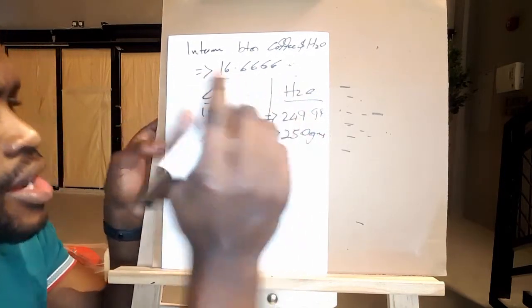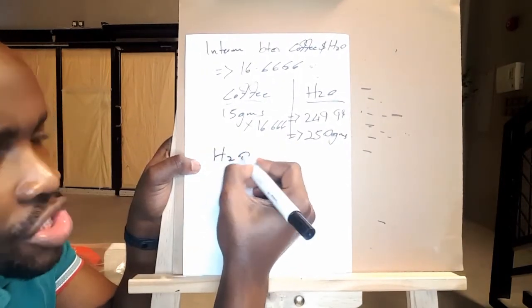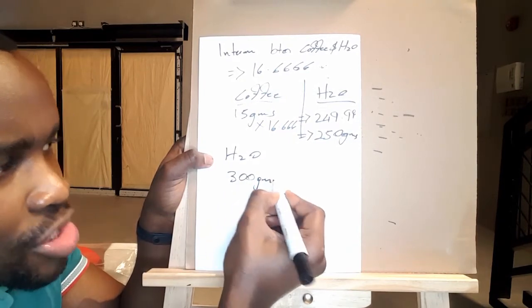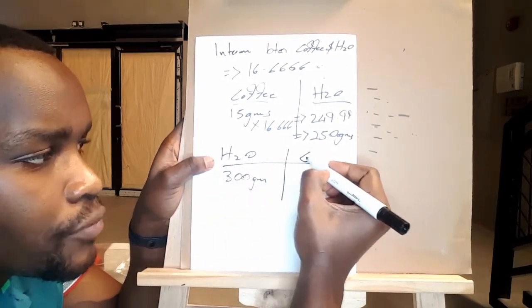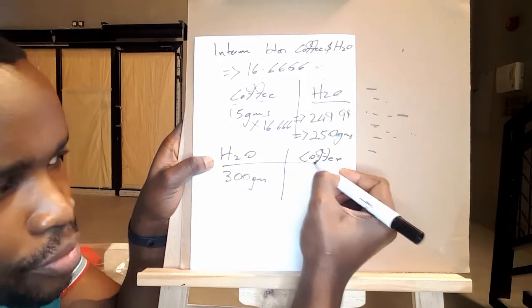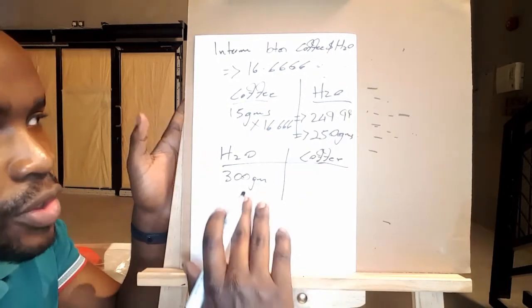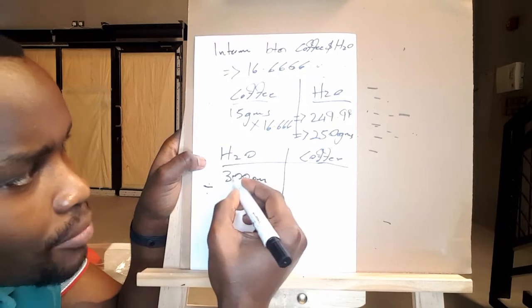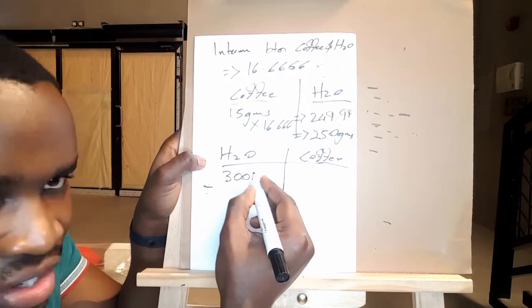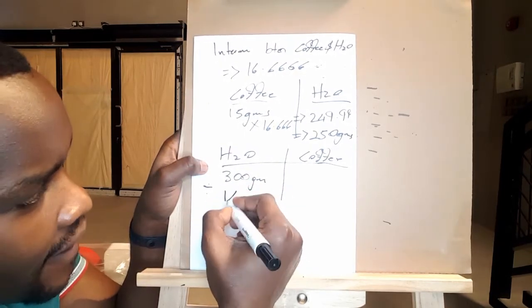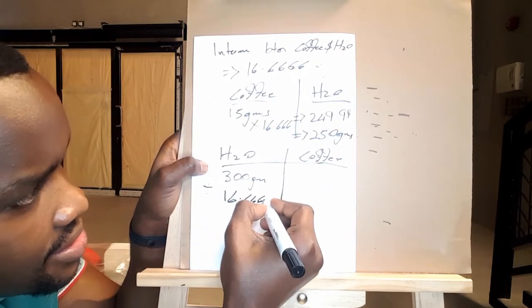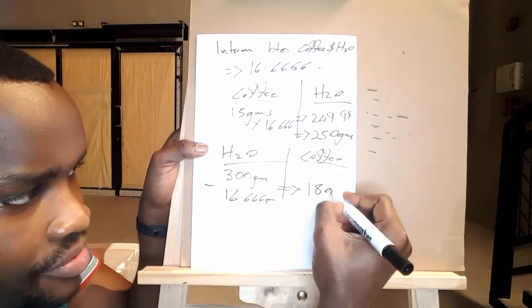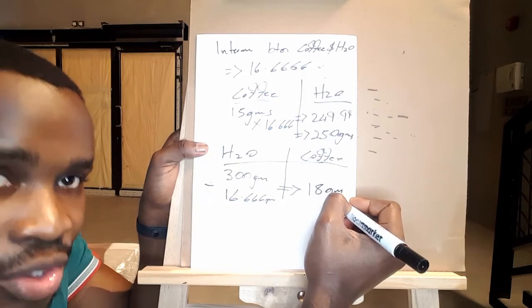So you get my point. If I have 15 grams, I'm going to multiply it with the intermediate, which is 16.6666. So another barista is going to ask, what if I have water? What if I have 300 grams of water? How much coffee do I need to brew a cup? What are we going to do? Now here we bring our intermediate and divide with the 300. So we're going to say 300 divided by 16.6666 grams. And the answer is going to be 18 grams of coffee. You understand my point?